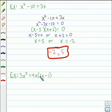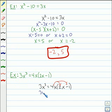Let's move on to the second example. This time we have 3x cubed equals 4x times 2x minus 1. So our first step is to distribute 4x to 2x minus 1. That will give us 3x cubed equals 8x squared minus 4x.